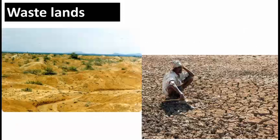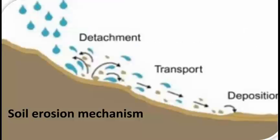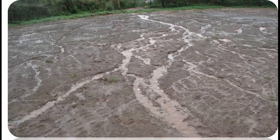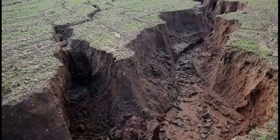As raindrops fall on the ground, splash erosion takes place and small particles of soil get detached and transported along with the runoff from one place to another, and then get deposited. This detachment, transport, and deposition of soil produces soil erosion. This runoff gets converted into streams, and these streams can get converted into rills and gullies, causing heavy soil erosion.